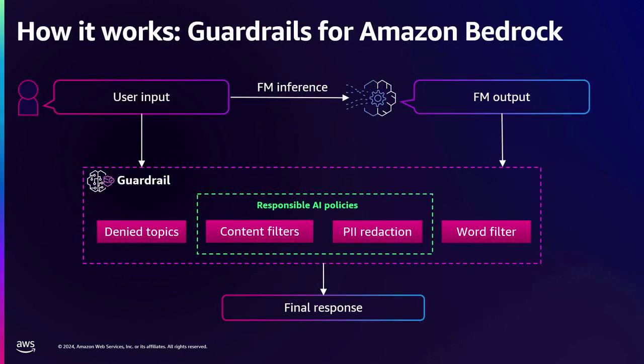So how does Guardrail work? As you can see from the architecture diagram, Guardrails work by intercepting the user input as well as the foundation model responses. It's a two-way validation where we validate both the input and the output. Each Guardrail can contain a set of configured policies — there are four different policies available right now: denied topics, content filters, PII redaction, and word filter. If the input or output violates any of these policies, a pre-configured approved message gets returned to the end users, ensuring the safety of the GenAI application.